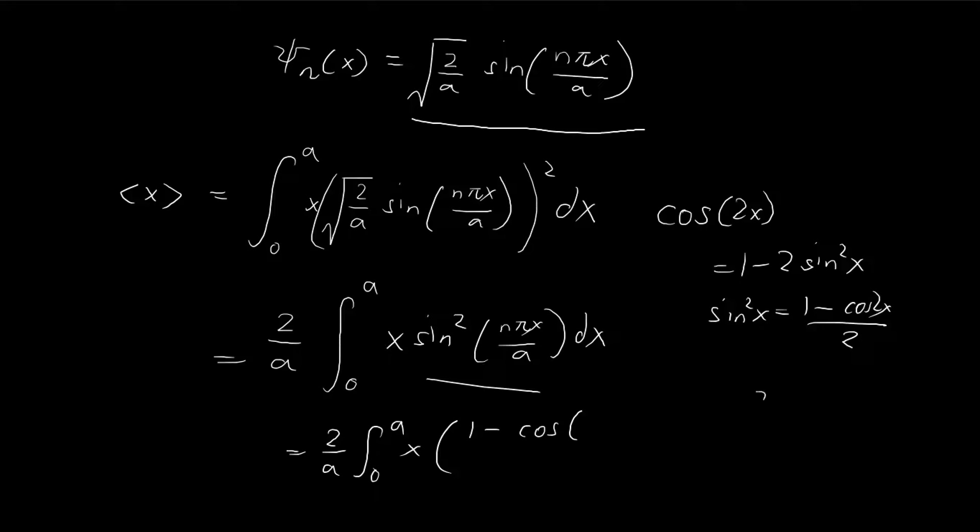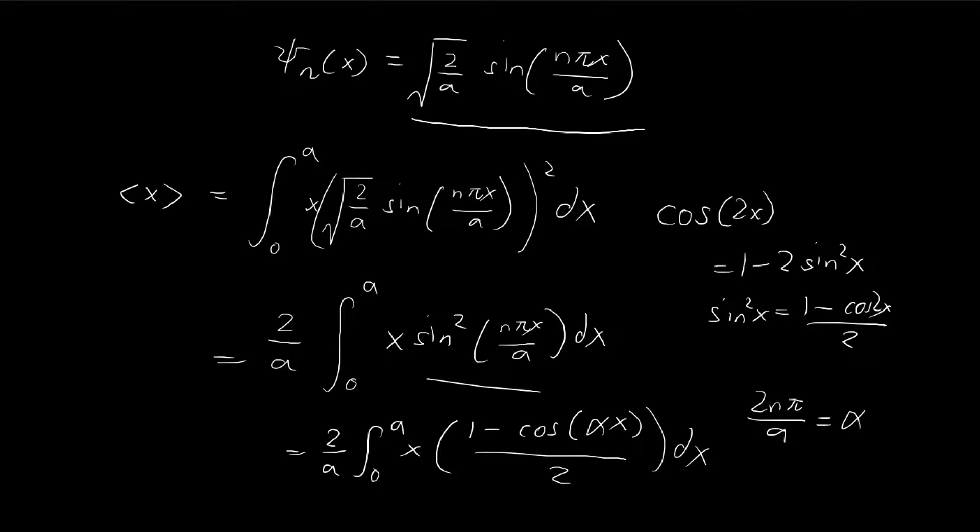Here, for the sake of convenience, I'm going to let 2 n pi divided by A be equal to alpha. I just don't want to write all those symbols again. So divided by 2 dx. Now all we have to do is just to solve this integral.